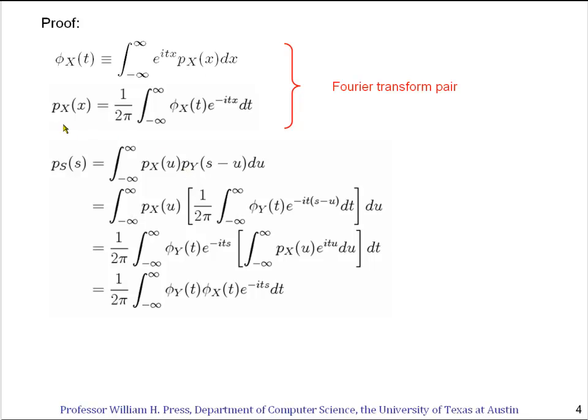So you'll see we therefore get a phi_y(t) and an e to the minus it, and then we have to put the argument in right here, so that's the s minus u that goes here.